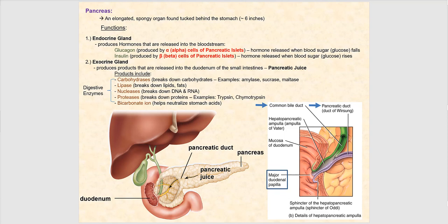The pancreas has two very important functions. Function number one: it functions as an endocrine gland, meaning it produces hormones that ultimately end up in blood. The hormones produced include glucagon, produced by the alpha cells of pancreatic islets.